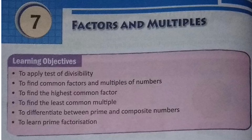In this chapter, we are going to learn: the test of divisibility, how to find common factors and multiples of numbers, how to find the Highest Common Factor (HCF), and how to find the Least Common Multiple (LCM). We will also differentiate between prime and composite numbers and learn prime factorization using two methods — the tree method and the division method.